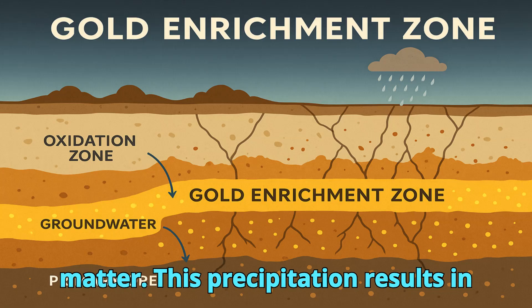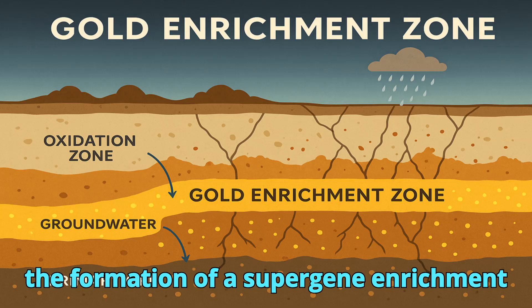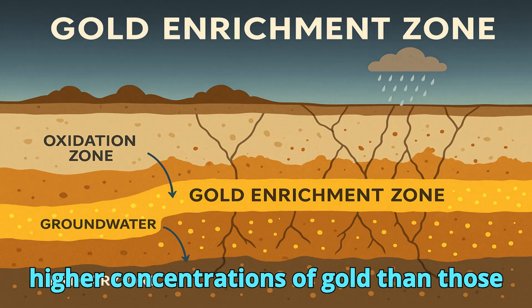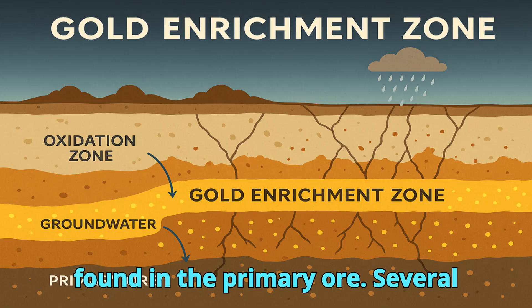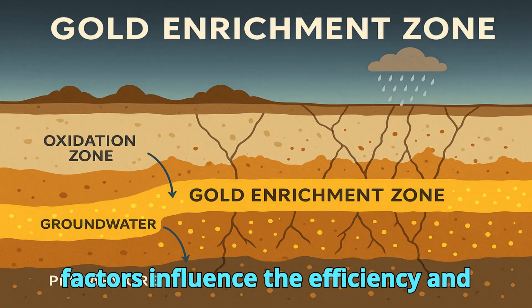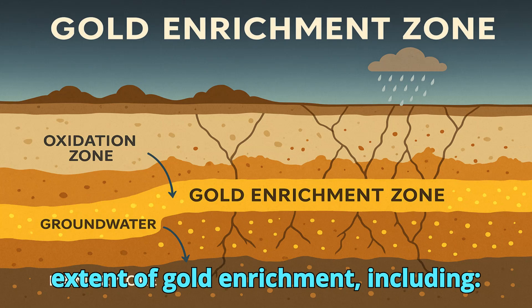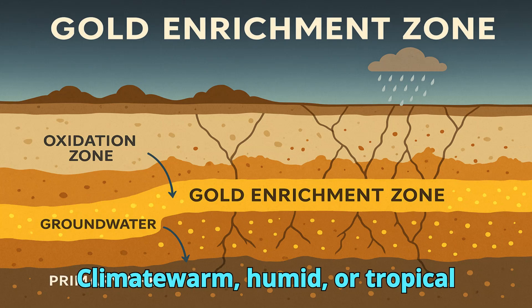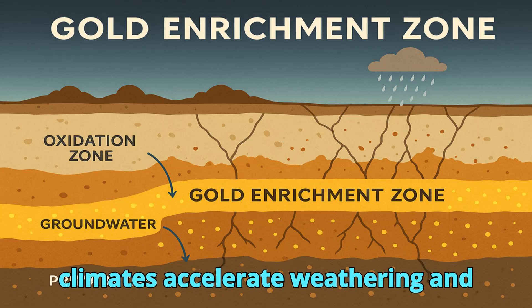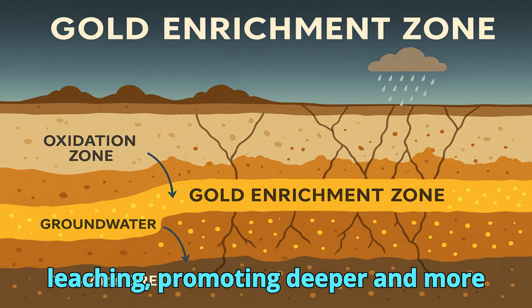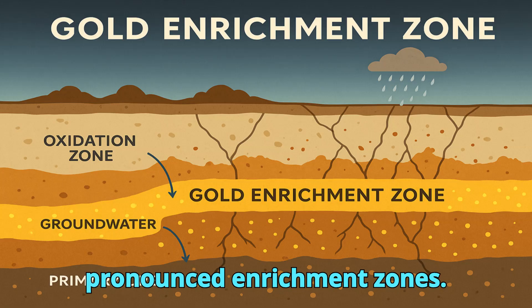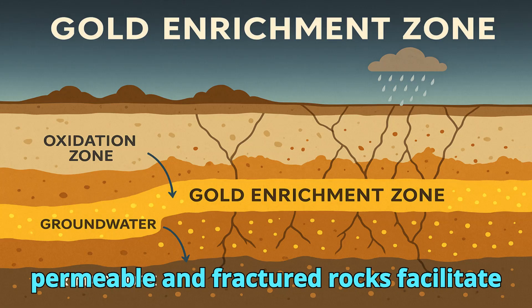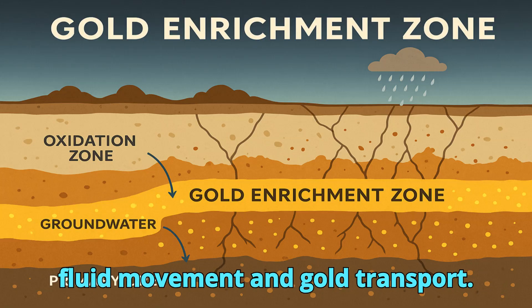This precipitation results in the formation of a supergene enrichment zone, typically characterized by much higher concentrations of gold than those found in the primary ore. Several factors influence the efficiency and extent of gold enrichment, including climate — warm, humid, or tropical climates accelerate weathering and leaching, promoting deeper and more pronounced enrichment zones — and host rock composition, where permeable and fractured rocks facilitate fluid movement and gold transport.